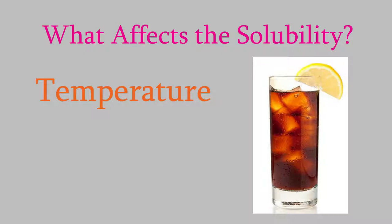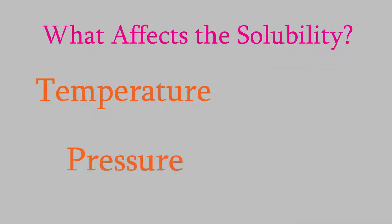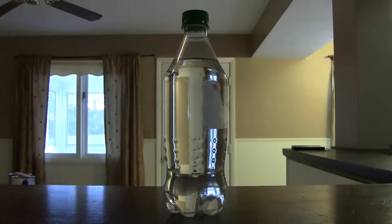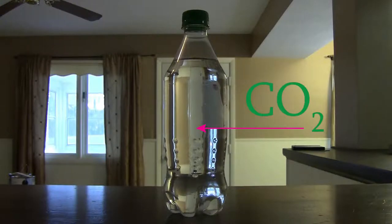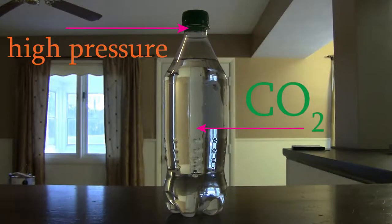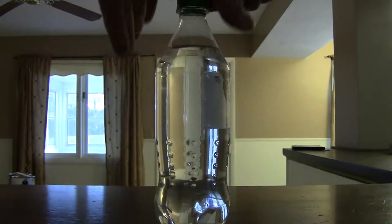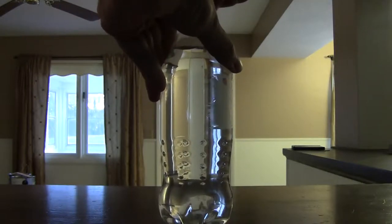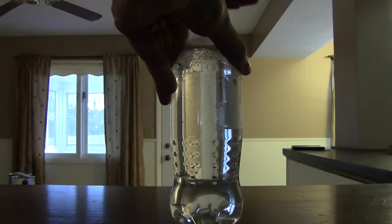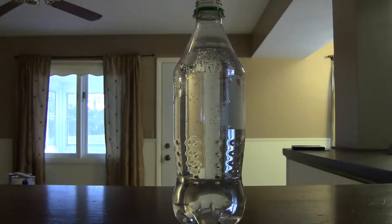Another way we can change how soluble something is is by changing the pressure. This is especially easy to see when we try to dissolve a gas in our solvent. For instance, when we have a bottle of soda, you know that it has carbon dioxide dissolved in it. Here's an unopened bottle — it looks like plain water, with no evidence of any gas. That's because right now there's a fairly high pressure, much more than one atmosphere, in the bottle above the liquid. When I unscrew the cap, I release all that pressure. Now the pressure above the liquid is lower — just the same as the pressure in the room. As a result, the carbon dioxide in the soda isn't as soluble in the water, and it doesn't stay dissolved anymore.